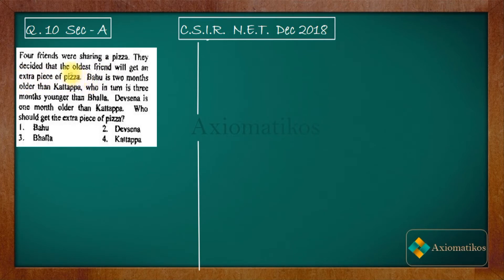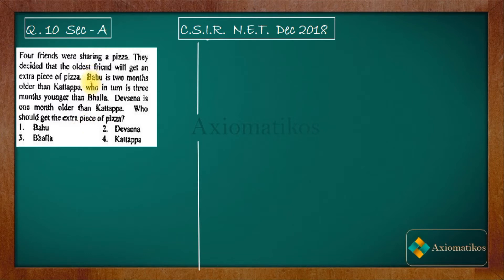Focus on this key point: the oldest friend will get an extra piece of pizza. Bahu is two months older than Katappa, who in turn is three months younger than Bhalla. Devsena is one month older than Katappa. Who should get an extra piece of pizza? You have these options in hand. Let us write out what is given.